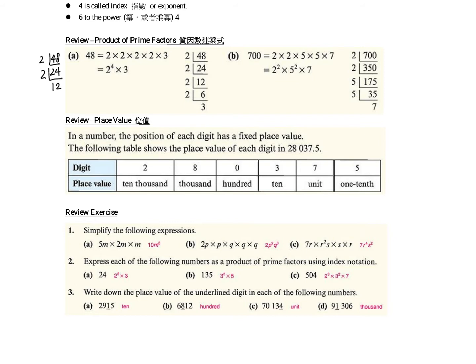We need to use 2. 2 times 12 is 24, then 2 times 6, then 2 times 3. So 48 equals 2 to the power of 4 times 3.